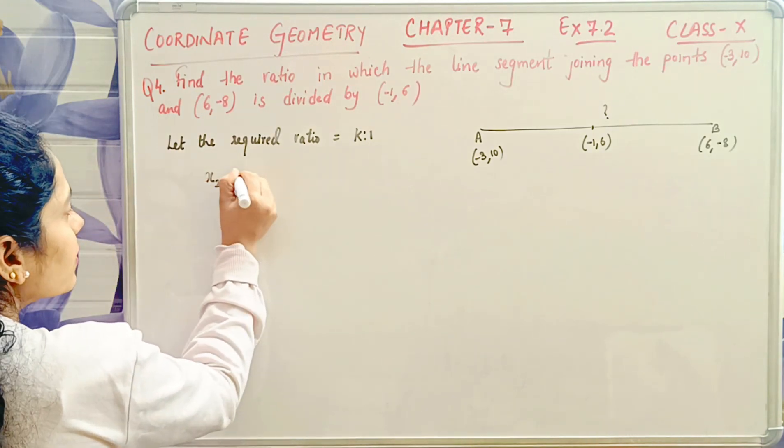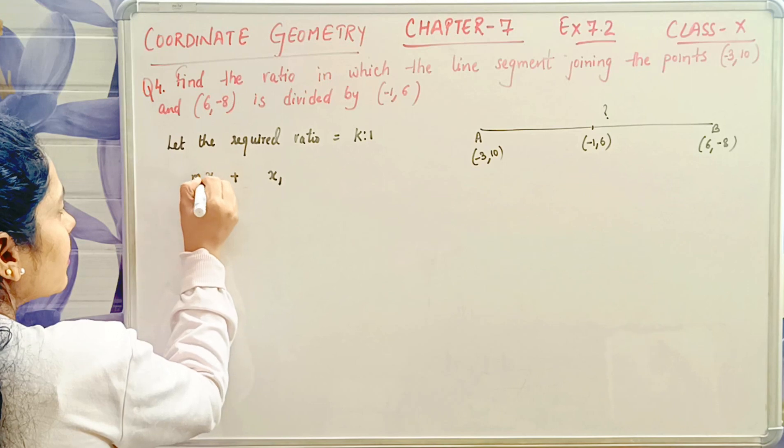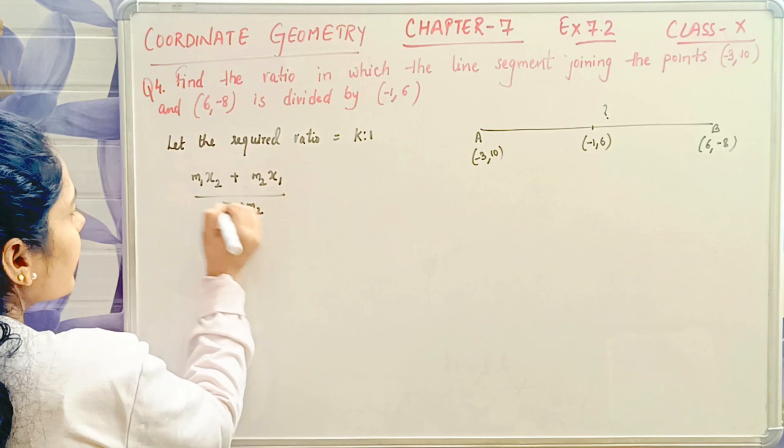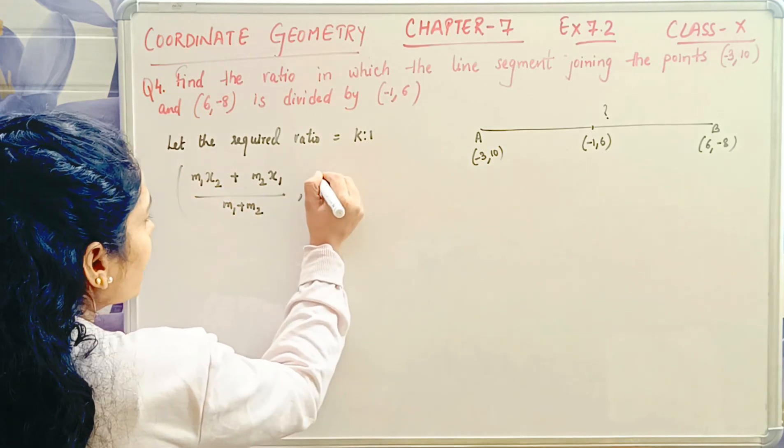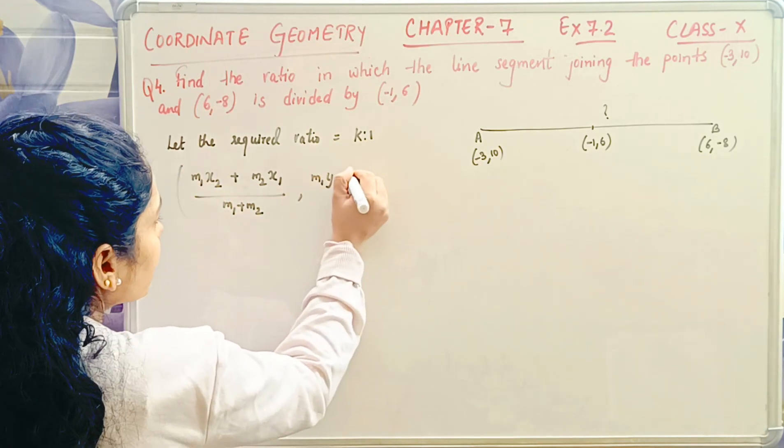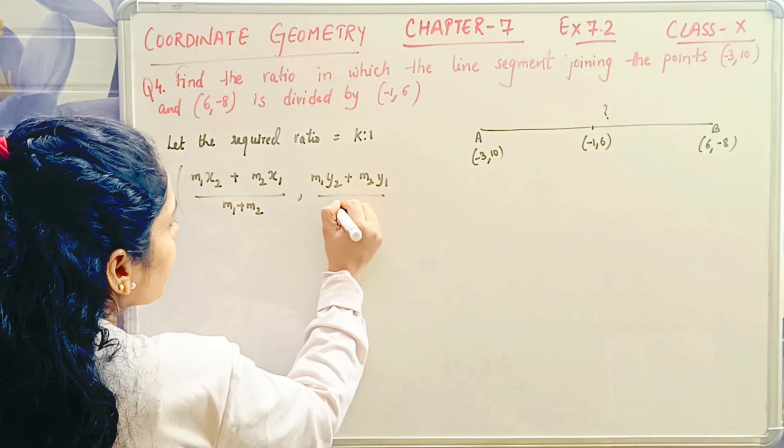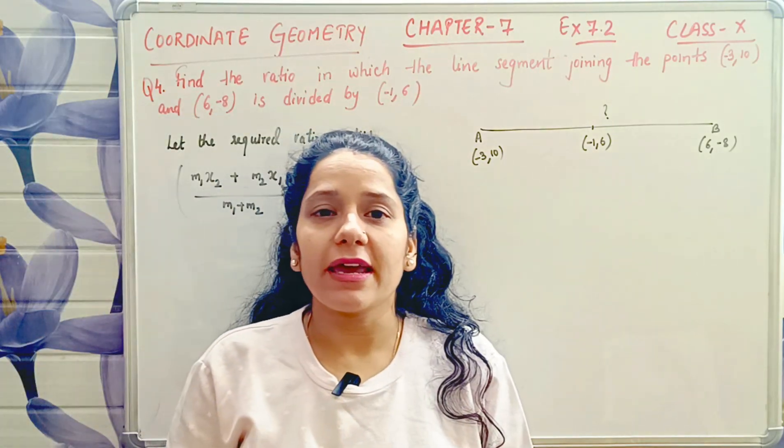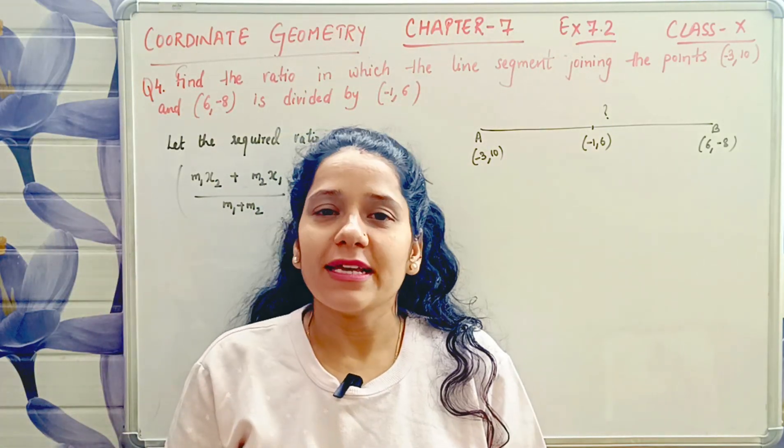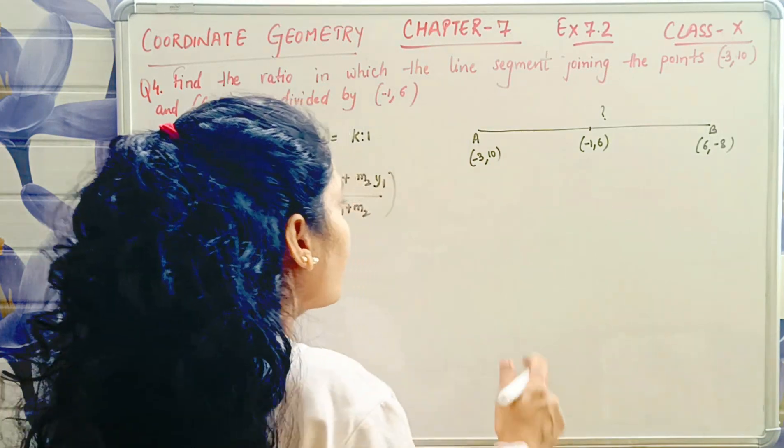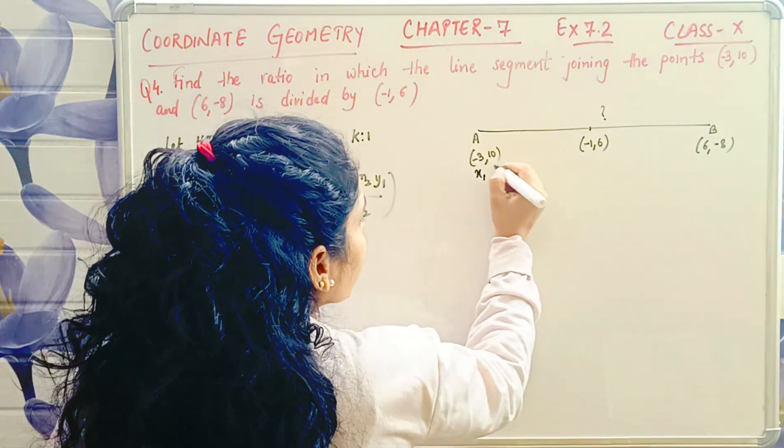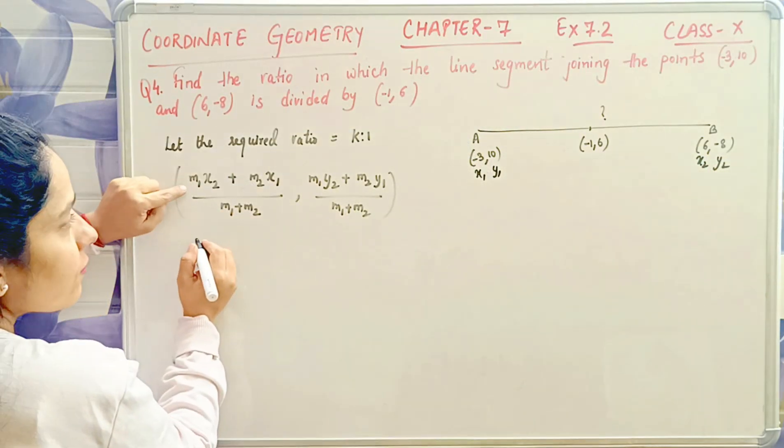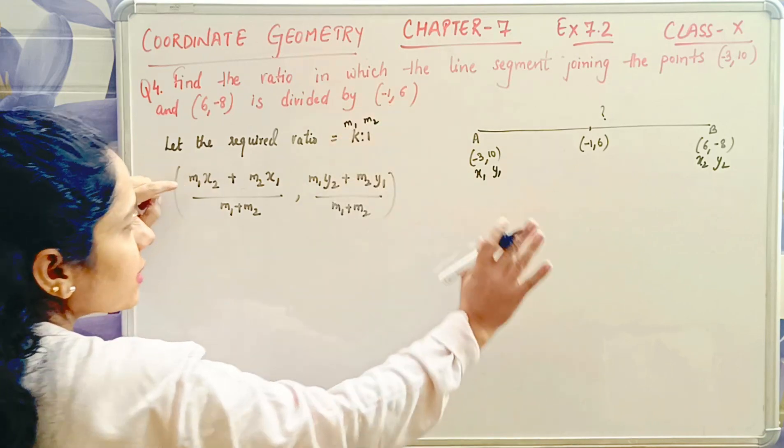So let's start. The formula is: (m1·x2 + m2·x1) / (m1 + m2), (m1·y2 + m2·y1) / (m1 + m2). Now the values given are, you know what points are: this is x1, y1, this is x2, y2. Now the values are given, this is m1, m2. All the values given are.